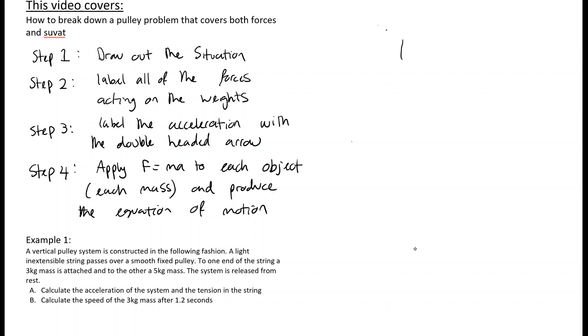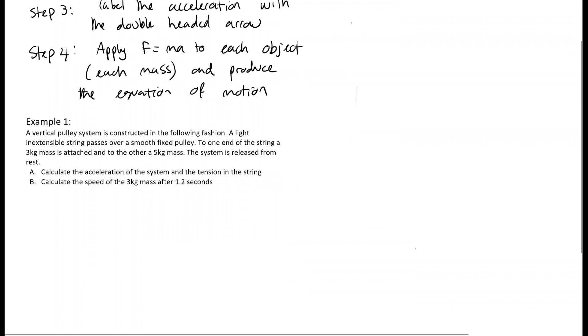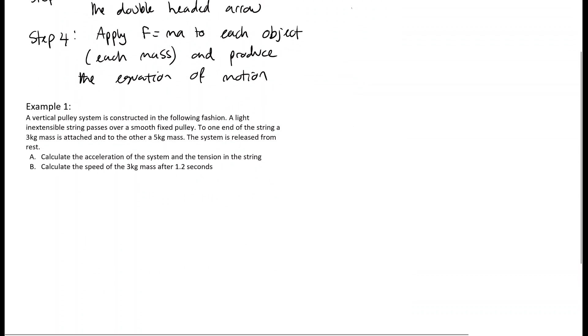Okay, we'll apply these steps to example one. A vertical pulley system is constructed in the following fashion. A light, inextensible string passes over a smooth fixed pulley. To one end of the string a 3 kilogram mass is attached and to the other a 5 kilogram mass. The system is released from rest. Even before being asked the question,